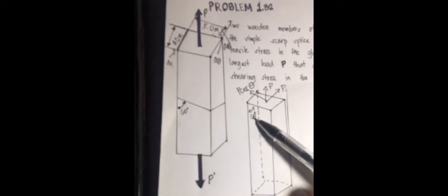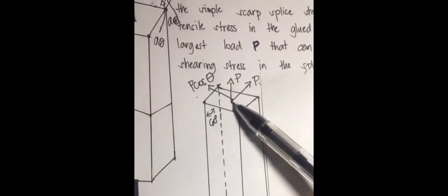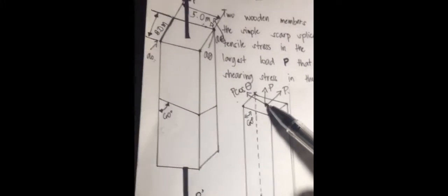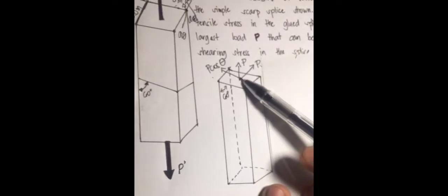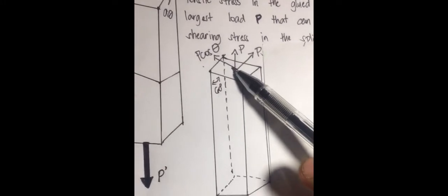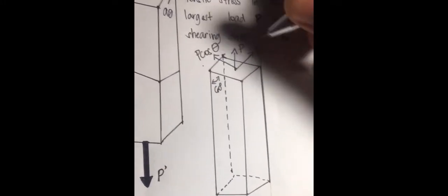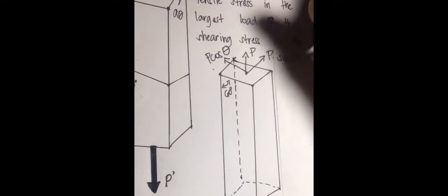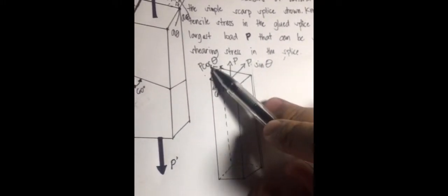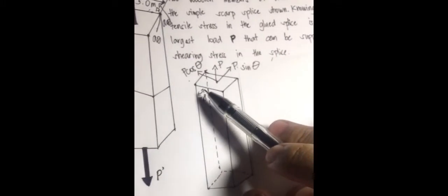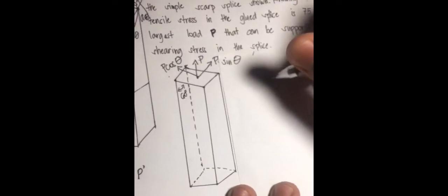So, here we have a 60-degree angle, and we have a force P acting on the body in an upward position. And there's a normal force, P cosine theta, and acting parallel to it, which is the P sine theta. And then perpendicular to the 60-degree angle is the P cosine of theta.